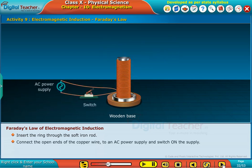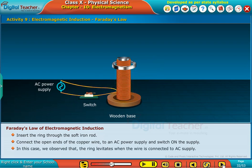Connect the open ends of the copper wire to an AC power supply and switch on the supply. In this case, we observe that the ring levitates when the wire is connected to AC supply.